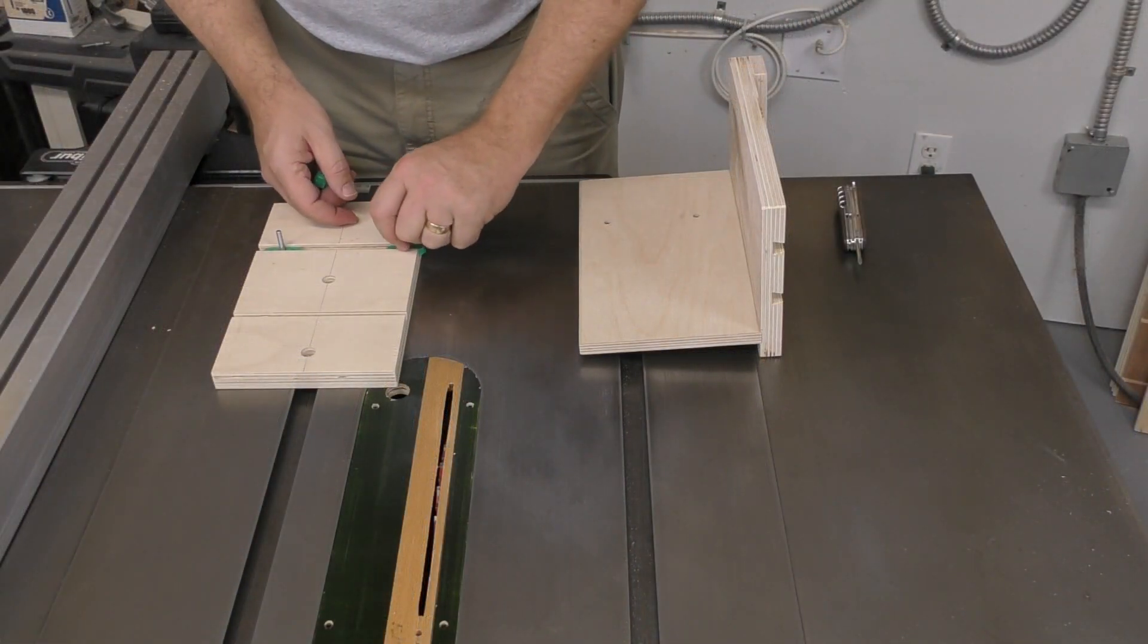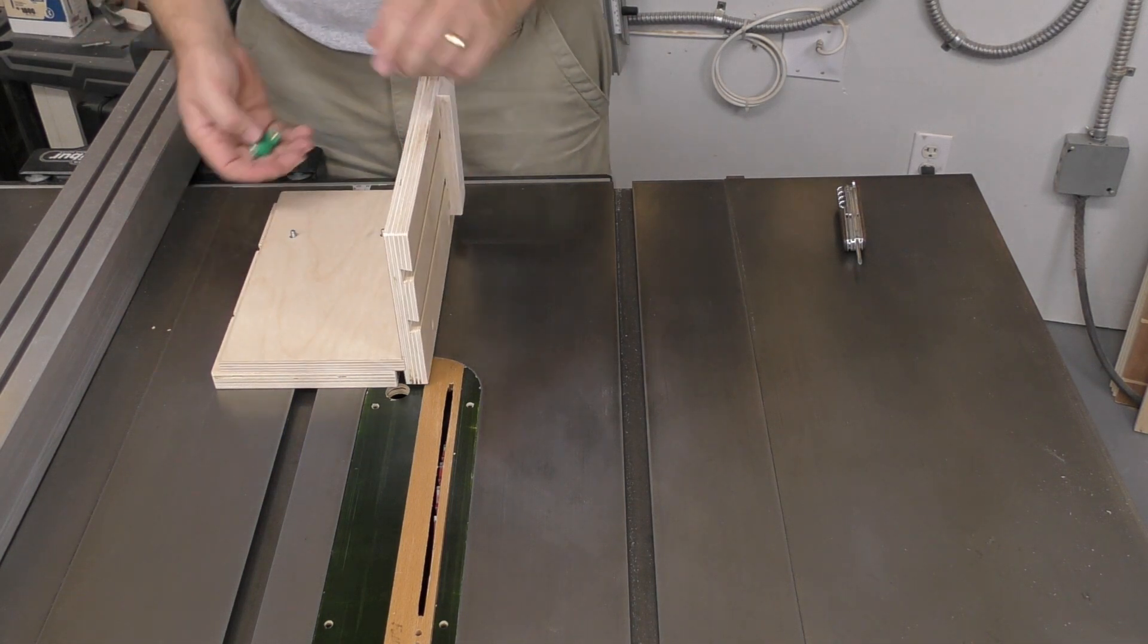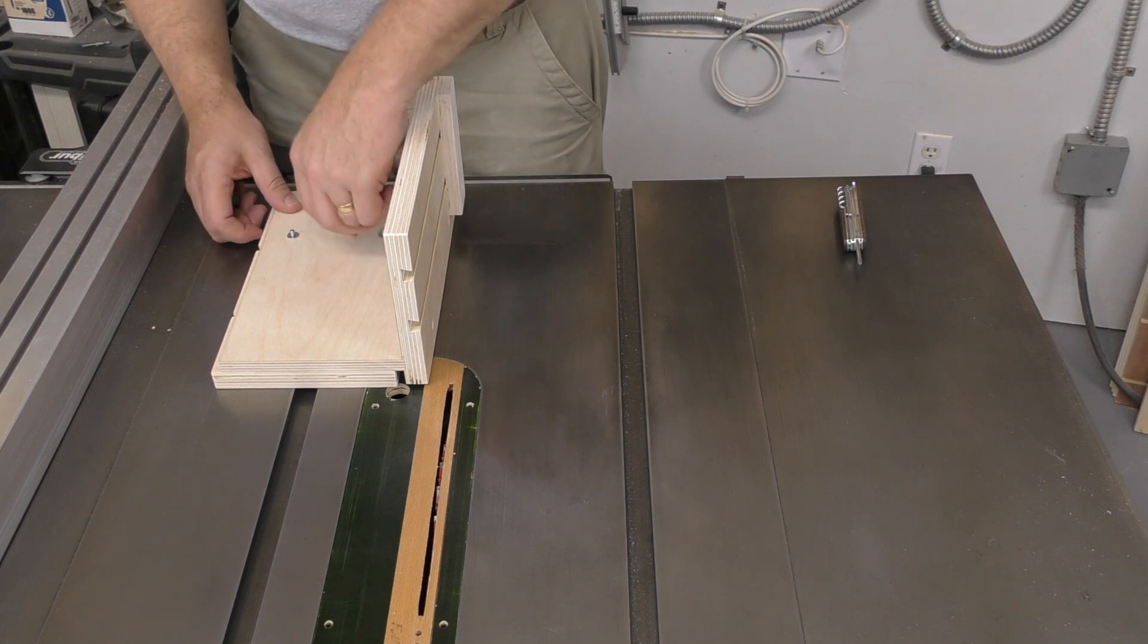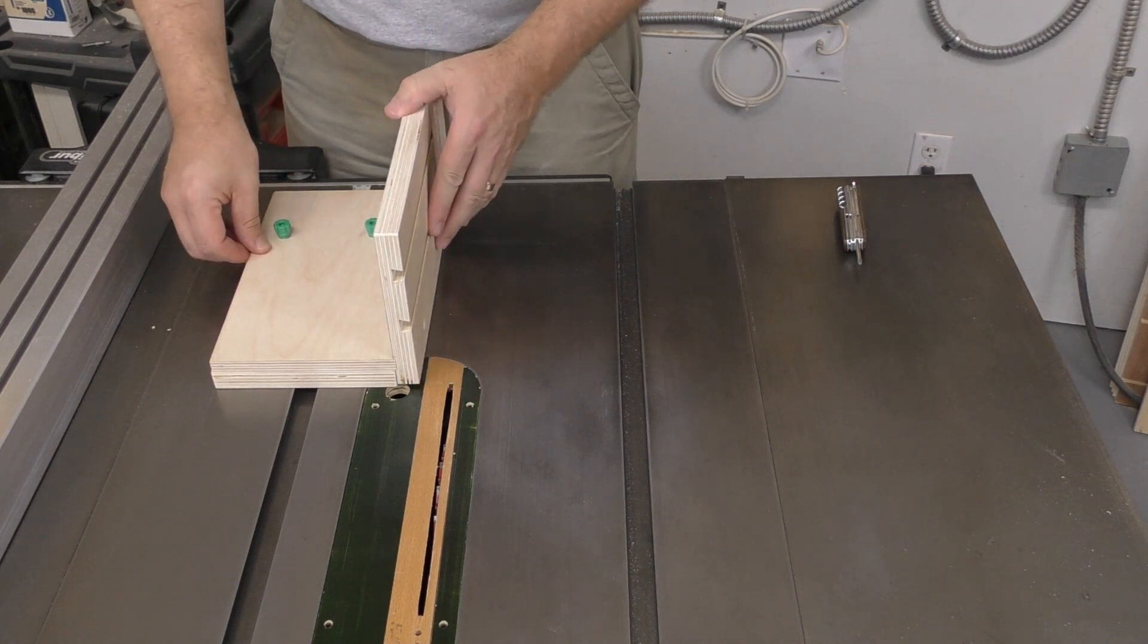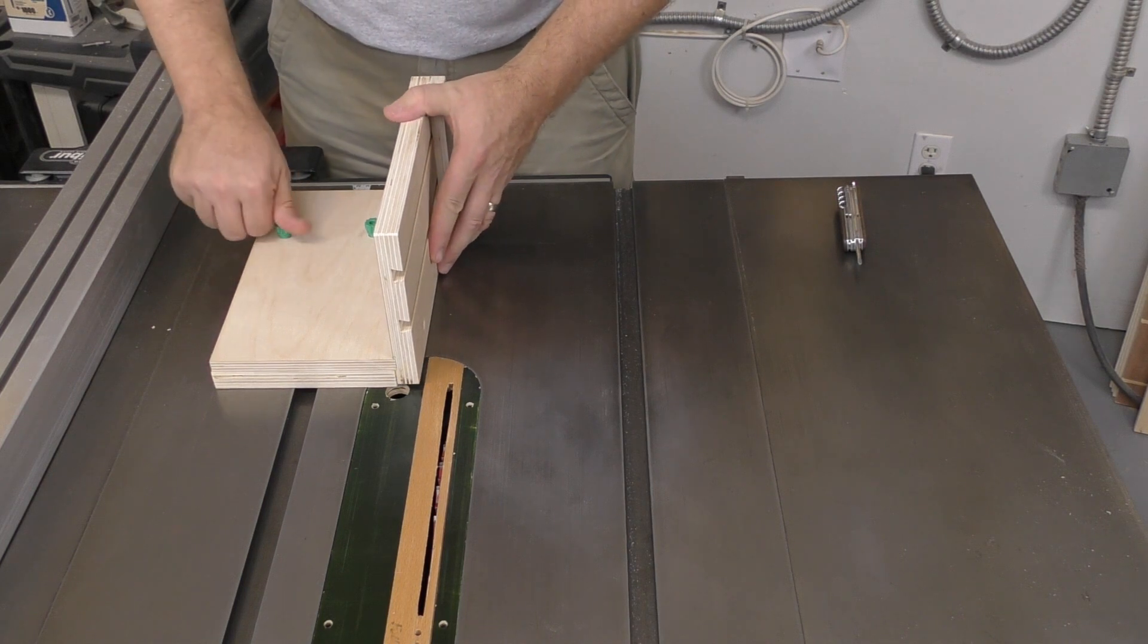The track screws are slid into the dovetail groove on the base, and the vertical face assembly set into place, feeding the threaded rods from the track screws through the holes in the slide. The vertical face slides side to side along the hardwood runner, and the track screws clamp it in place once it's positioned.